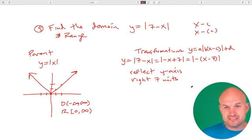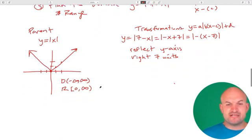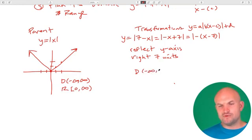So we have right 7 units, reflect the Y-axis. Now to understand the domain and range. Well, the cool thing about this graph is the domain's all real numbers. So it doesn't matter what transformation I'm going to do. The domain is always going to be all real numbers.